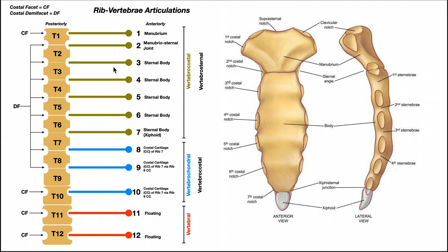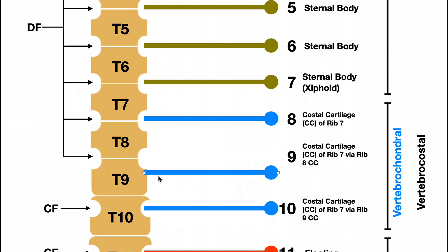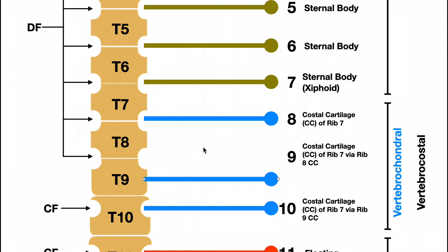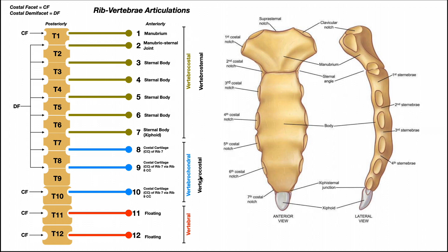One more thing before discussing anterior articulations: in some individuals, rib 9 can articulate with a complete costal facet lying entirely on T9, rather than being shared between T8 and T9 via demi-facets. This is a genetic variation not observed very often. Those are the posterior articulations.